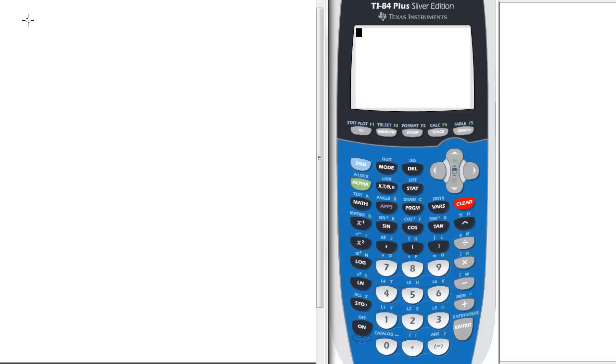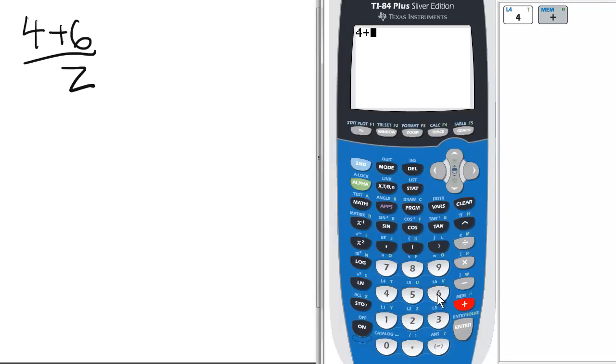For example, let's say we have a problem in a book and it's written 4 plus 6 over 2. You think, okay, I'll just enter that in the calculator: 4 plus 6 divided by 2.